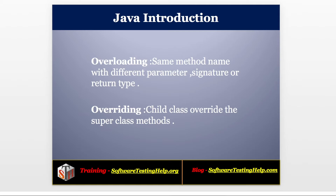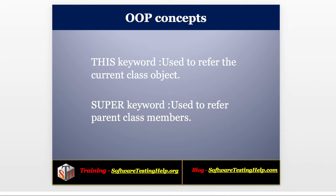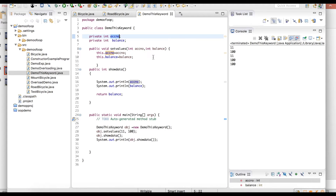Now we will see about the 'this' and 'super' keywords. The 'this' keyword is used to refer to the current object, and the 'super' keyword is used to refer to the parent class members. We will see examples for both keywords in programming. First we will see a program to explain the super keyword, for which we need a child class and a parent class.